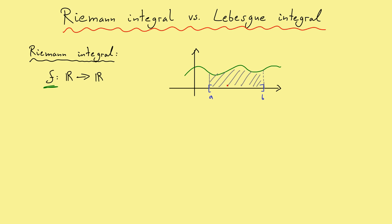We have the well-known idea to choose a partition of the x-axis and to approximate this area by choosing rectangles. This approximation is known as the lower sum or the upper sum — what I draw here is the well-known lower sum. If we now choose finer and finer partitions, we call this limit of the lower or upper sums the Riemann integral if the limit is well defined. This was a short summary of the Riemann integral.